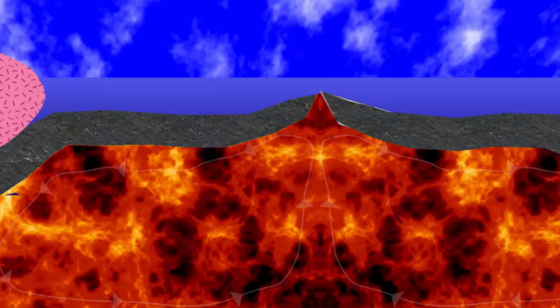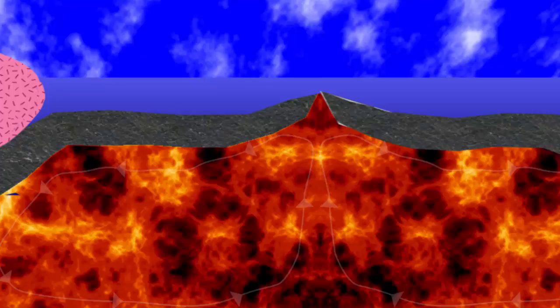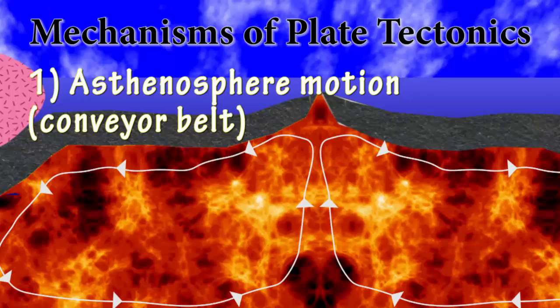So we can rephrase this convection of the asthenosphere mechanism for seafloor spreading as the conveyor belt mechanism. It's like the conveyor belt at the grocery store, in which the lithospheric groceries ride atop the conveyor belt asthenosphere.